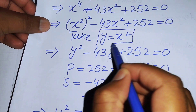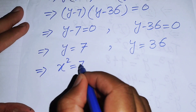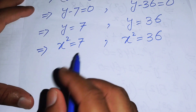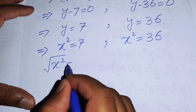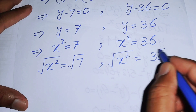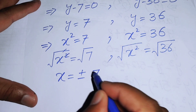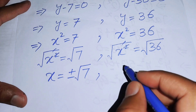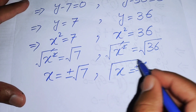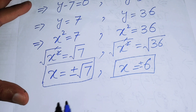Now we back-substitute y = x². From y = 7 we get x² = 7, and taking the square root gives x = ±√7. From y = 36 we get x² = 36, and taking the square root gives x = ±6. These are the four roots of the given algebraic equation and our final answer.